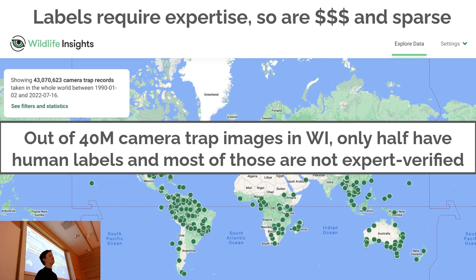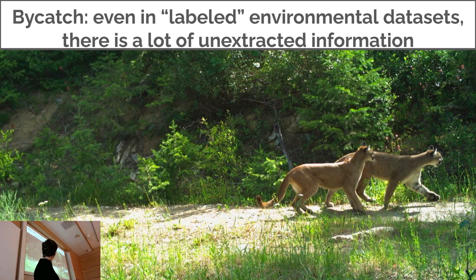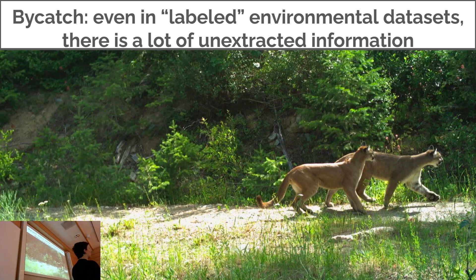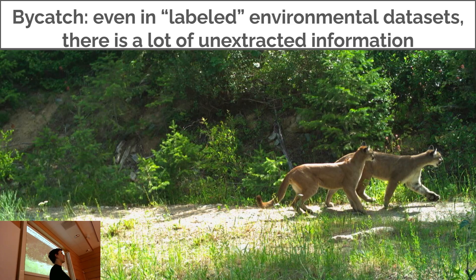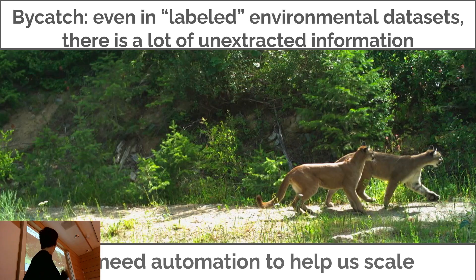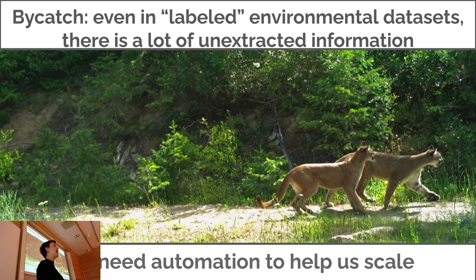Humans are not perfect, so we need to set our expectations appropriately for machine learning as well. Even in labeled datasets — say a dataset that has mountain lions in it — there's actually a ton of bycatch: unextracted information we're missing because we just don't have the capacity to process it. Every single plant in the background of an image, the health of those plants, what rates they're growing at — all of these are things we could extract if we had the capacity. So we need automation to help us. We need to automate these processes so we can make more of what we already have and really expand our information.